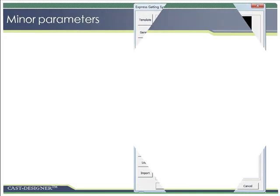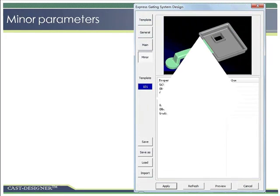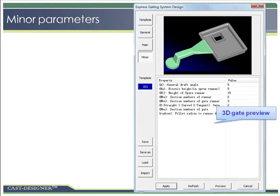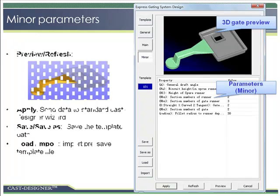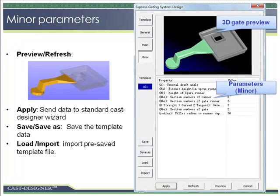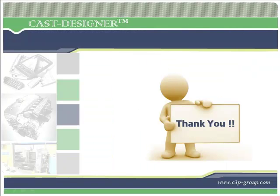Parameters that are not used as often have been placed on the minor parameters page, and the user can make modifications in a similar way. After defining the gate parameters, clicking the Apply button will send the data to the Cast Designer standard wizard for further editing or to generate the gating system directly. Save and Save As can save the template to a file, and Load and Import will load an existing gating system template file.